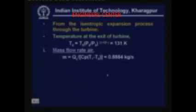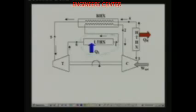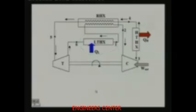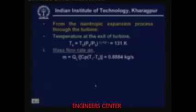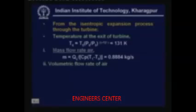Now we find the mass flow rate of air. Applying energy balance across the low temperature heat exchanger, QL = M_dot × Cp × (T1 − T6). QL is 100 kW, Cp is 1.005, and T1 and T6 are known. From this, M_dot is found to be 0.8884 kg/s.